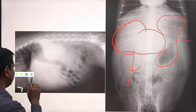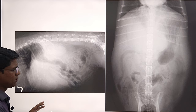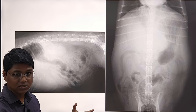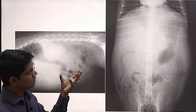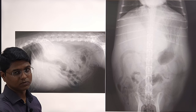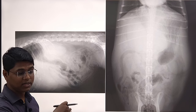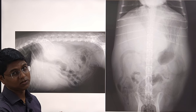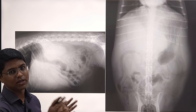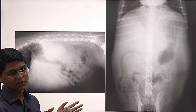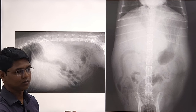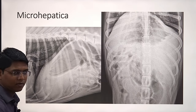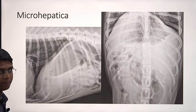In radiographs, things are interpreted — you are not supposed to diagnose the specific disease. You can only tell that hepatic enlargement or a mass is present. You cannot tell whether it is due to a specific etiology.